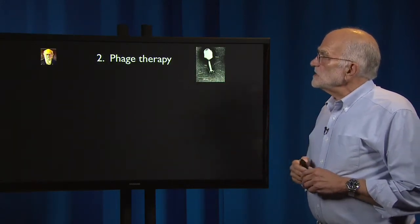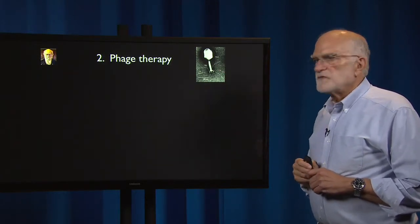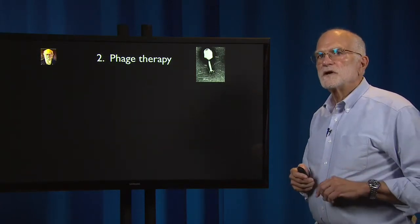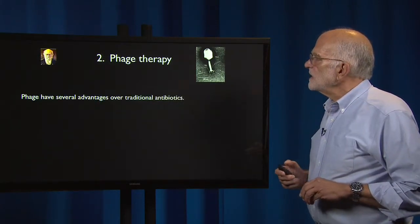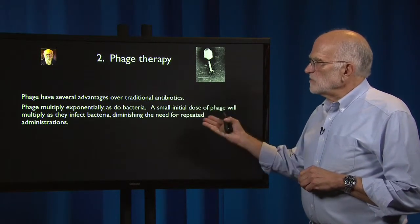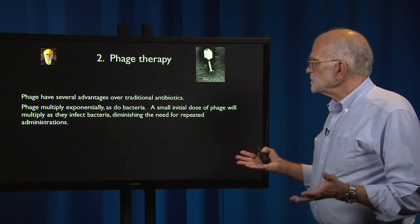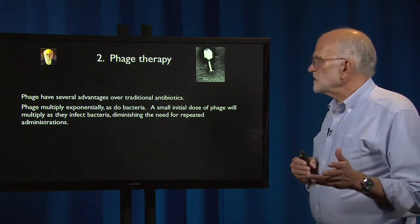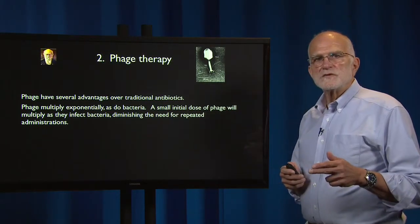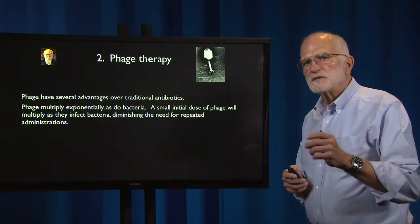The second possibility is phage therapy. A phage is a virus that attacks bacteria but does not attack eukaryotic cells. Phage have several advantages. First, they multiply exponentially as do bacteria, so a small initial dose of phage will multiply as they infect the bacteria, diminishing the need for repeated administrations. In other words, the dose self-adjusts to the intensity of the infection.